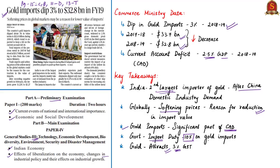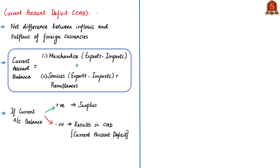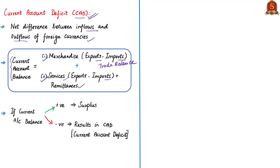Current account deficit (CAD) is the net difference between inflows and outflows of foreign currencies. To compute CAD, the current account balance is calculated first. It has two main components: the difference between merchandise exports and imports (the trade balance), and the services balance — the difference between services exports and imports — plus remittances. Adding these gives the current account balance. If positive, it is a current account surplus; if negative, it is the current account deficit.